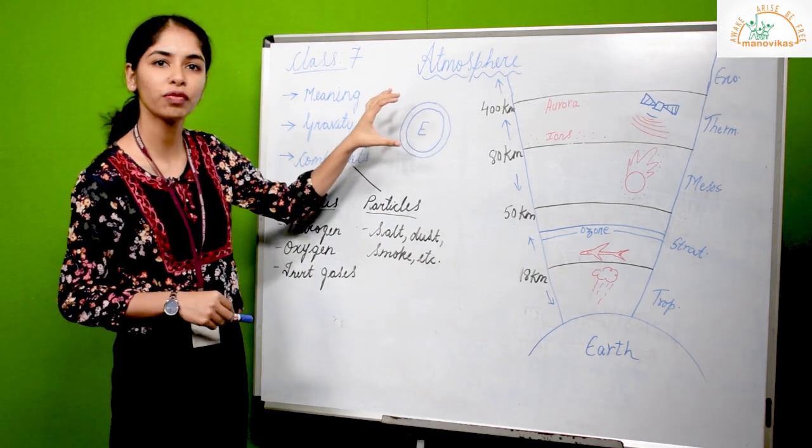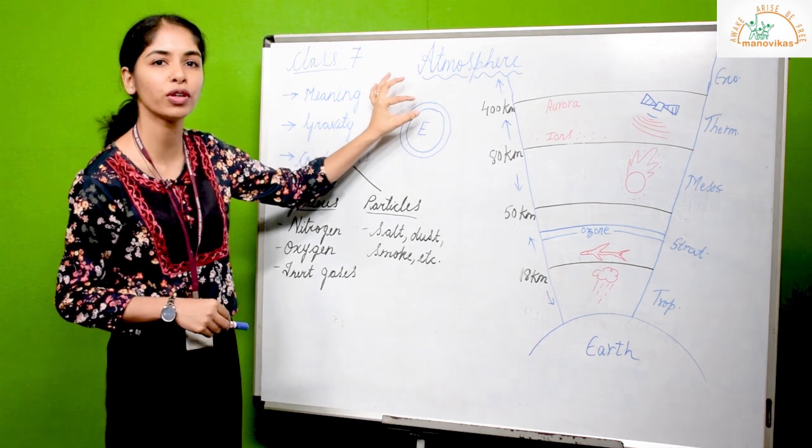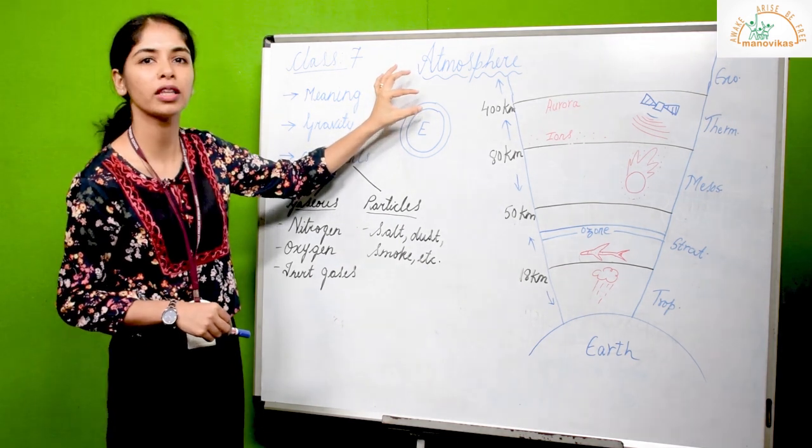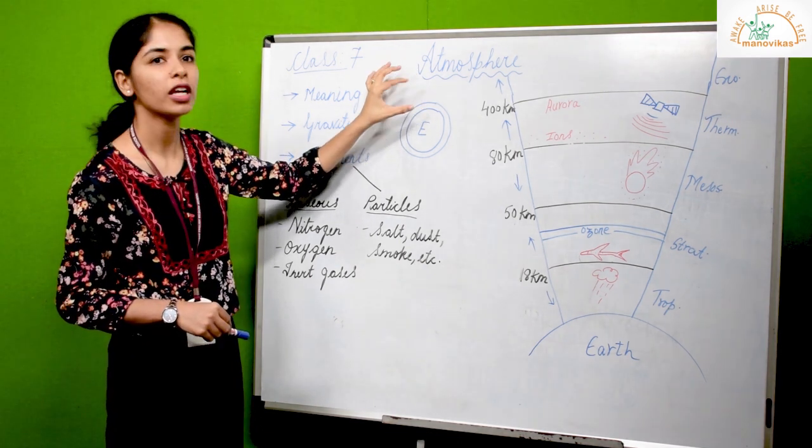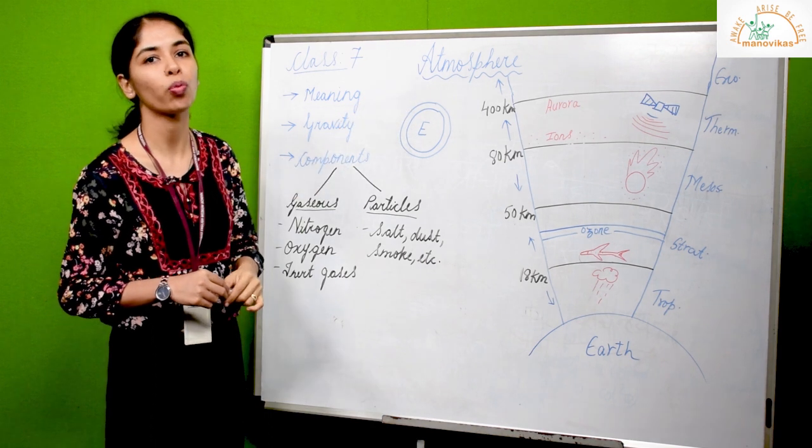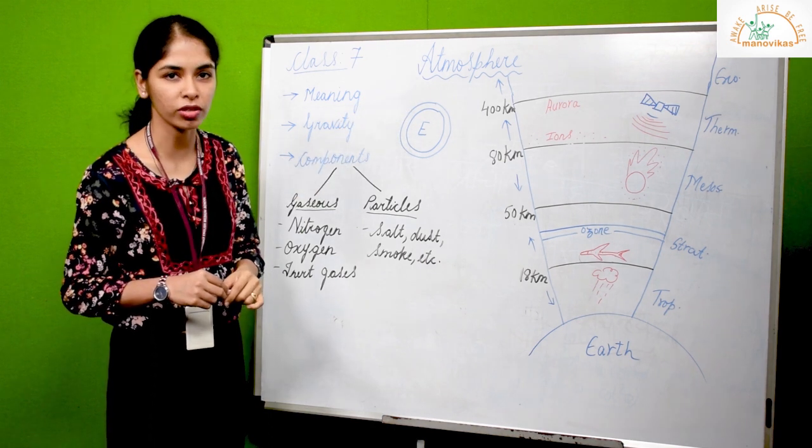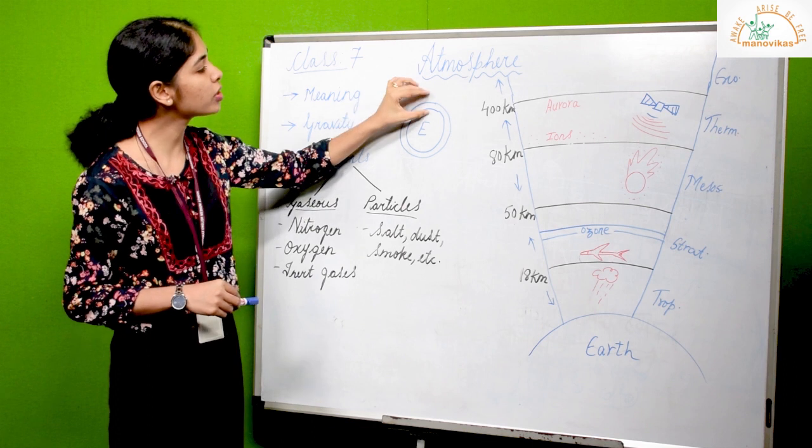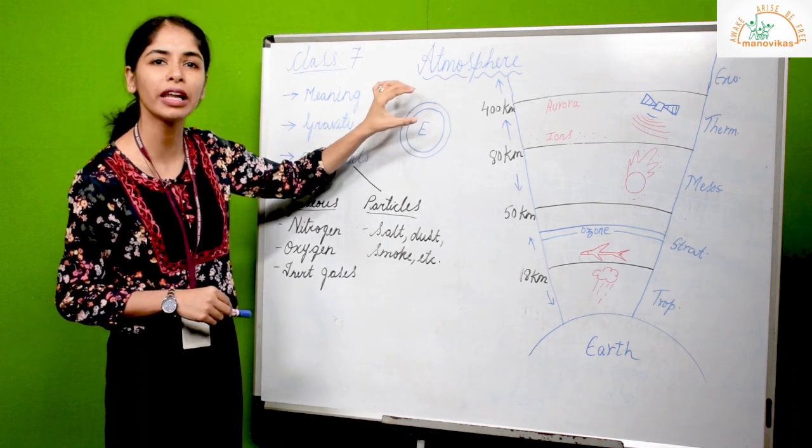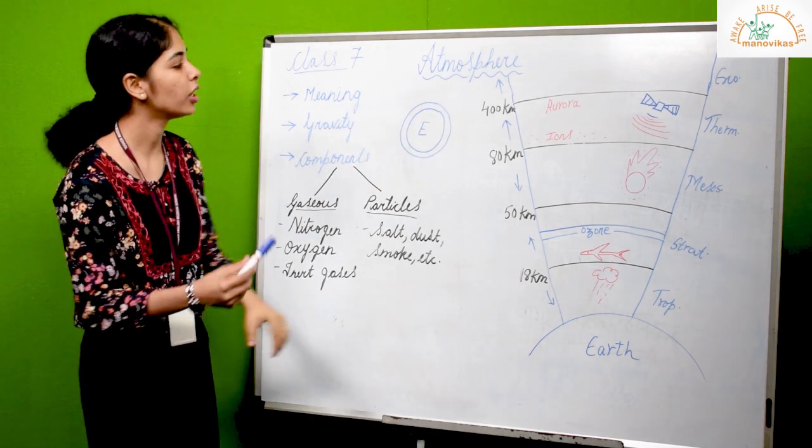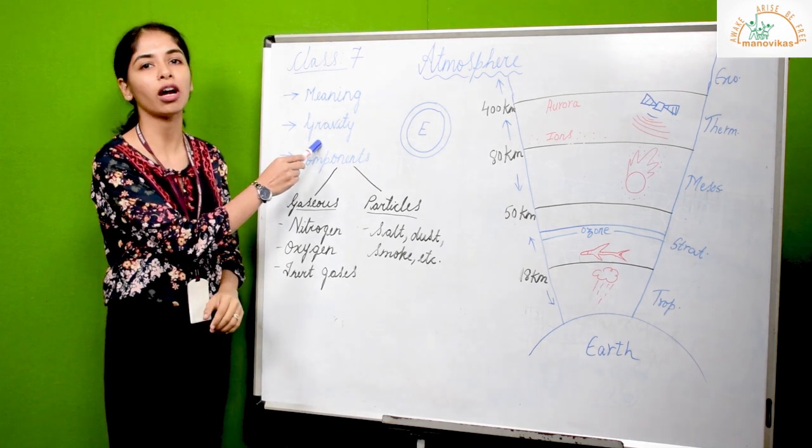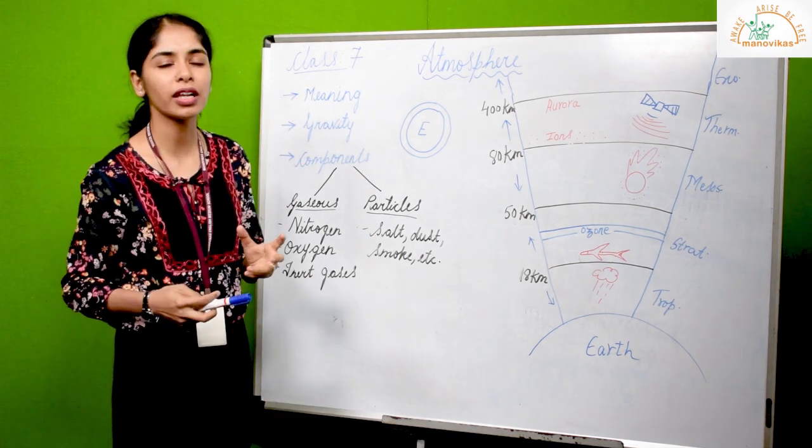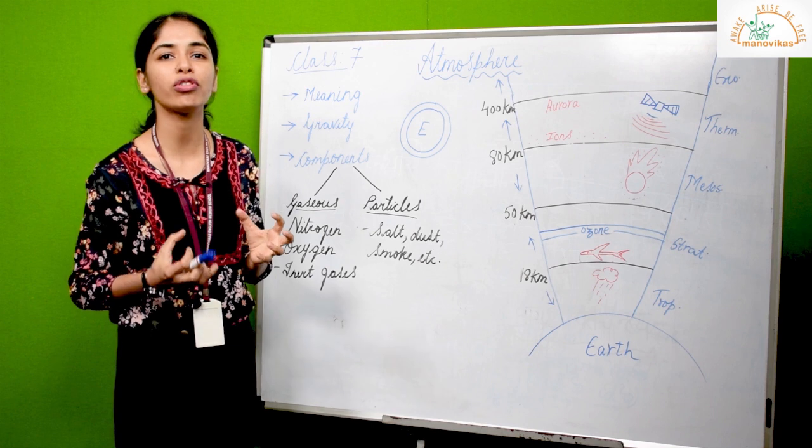Now let me put that in a pictorial form. If you look at the size of the earth and the size of the atmosphere, the atmosphere is quite thin. The approximate thickness of the atmosphere is about 1600 kilometers.